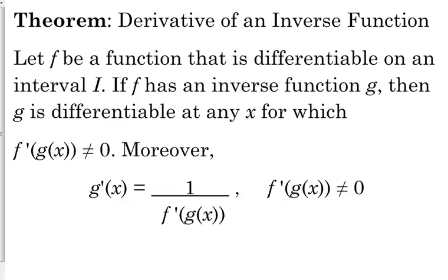Sometimes you will be given the function, sometimes you will be given the table of values, sometimes you will just be given select values. Here is the inverse. Of course your function has to be differentiable, f has to have an inverse function — we are going to call it g. If f has an inverse, then the inverse is also differentiable anywhere where the composition of the function and its inverse is not equal to 0. So here is how to find the derivative of the inverse of f, which is g. The derivative is 1 over f prime of g of x, given that that's not equal to 0, because we can't divide by 0.